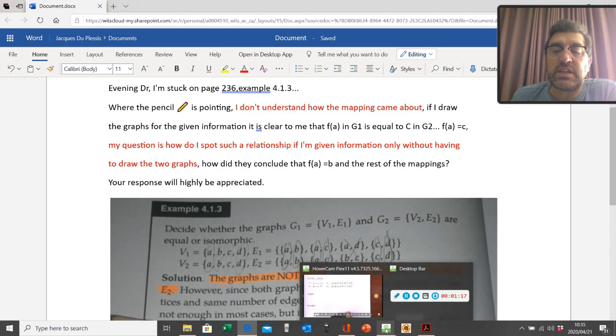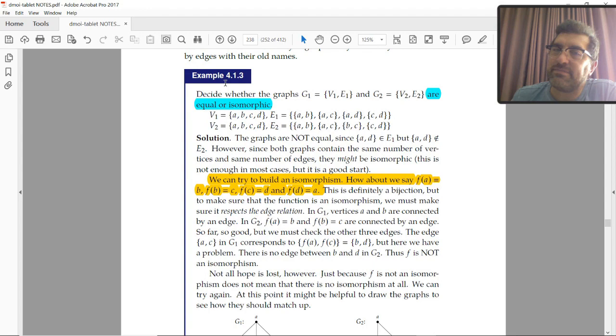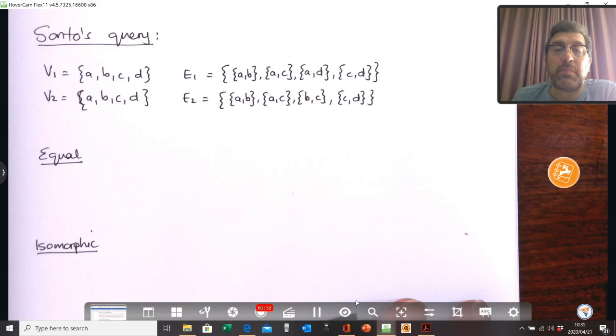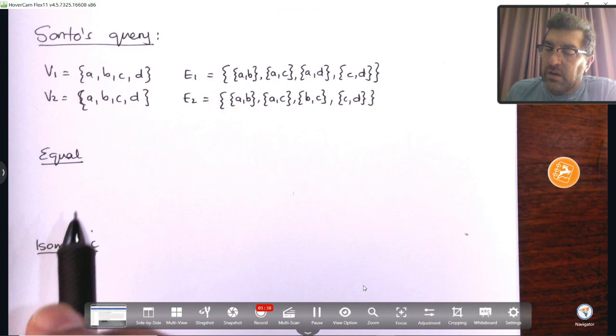Well, let's have a look at Santos' question here. There's the question in the original, in example 4.1.3. It says, are these graphs equal or isomorphic? Okay, so let us see, again, just to remind you how do we check for equal and how do we check for isomorphic?